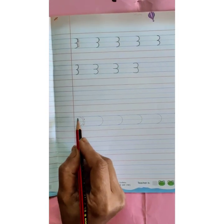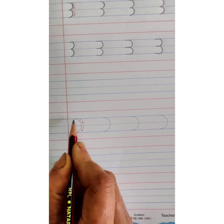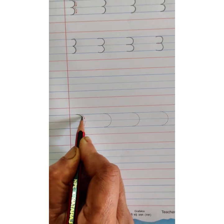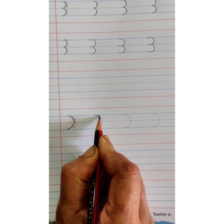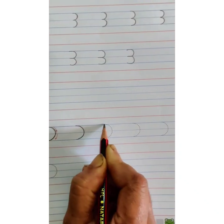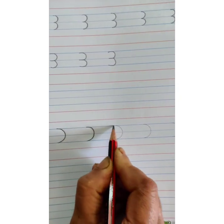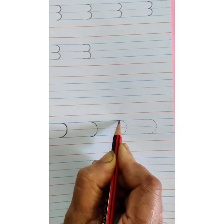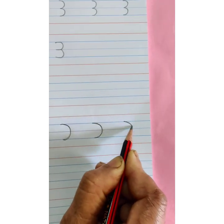Now let's start with the second pattern. This is reverse C. Start with the first blue line, trace the dots, go to the third blue line. Start with the first blue line, trace the dots, go to the third blue line. Trace the dots — reverse C. Start with the first blue line, trace the dots and touch the third blue line. This is reverse C.